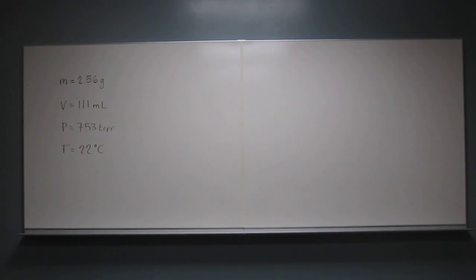So let's go ahead and do this problem. It's calculating the molar mass of an unknown gas. So it says, if 2.56 grams of an unknown gas occupies a volume of 111 milliliters at 753 torr and 22 degrees Celsius, calculate the molar mass of the unknown gas.